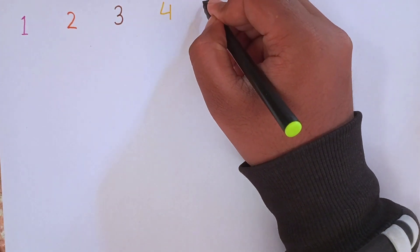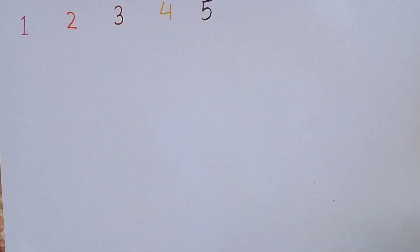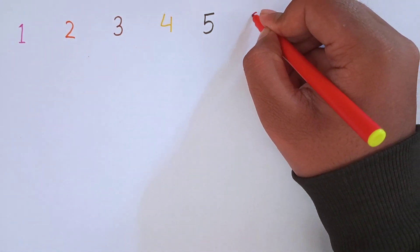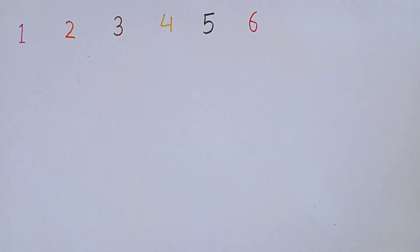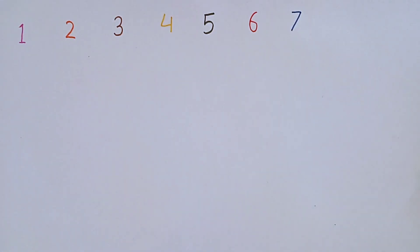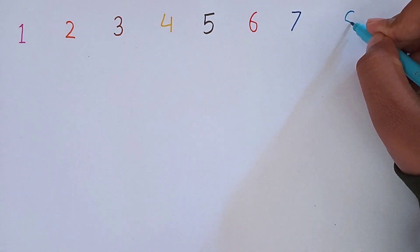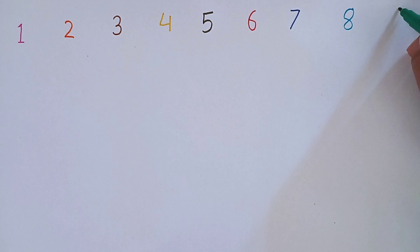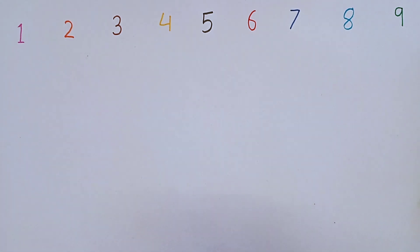1, 2, 3. After 3, I am writing 4. This is 4. After 4, I will write 5. Remember kids: 1, 2, 3, 4, 5. After 5, I am writing 6. 1, 2, 3, 4, 5, 6. After 6, the next number will be 7. 1, 2, 3, 4, 5, 6, 7. After 7, I am writing 8. This is 8.